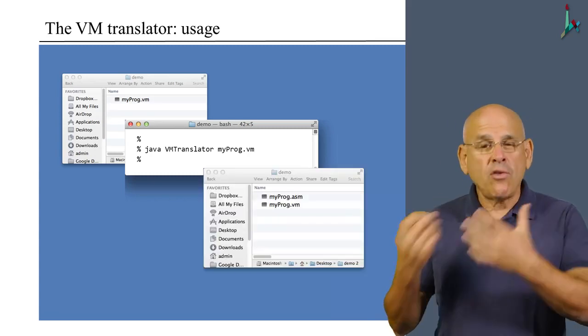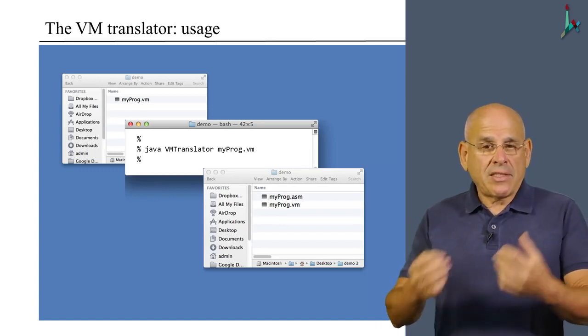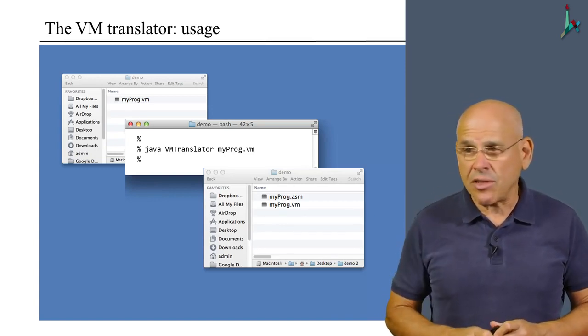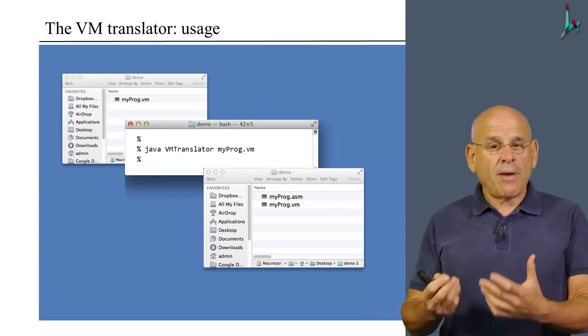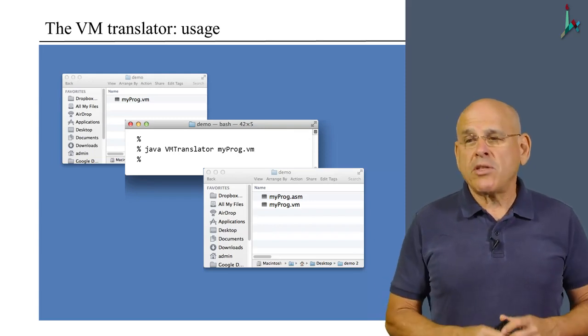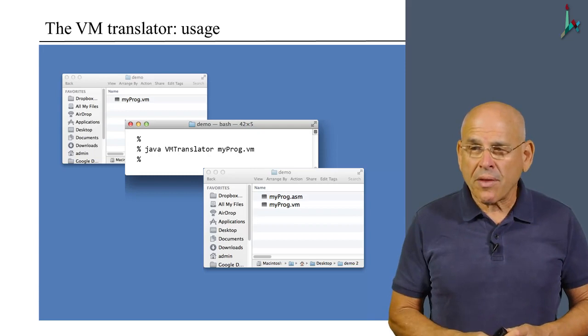if I look again into the current directory, I will see that a new file was created. This new file has the same name as my input file, but it has a different extension, an ASM extension. And presumably, this file contains the assembly code, which is the translation of the source VM code.